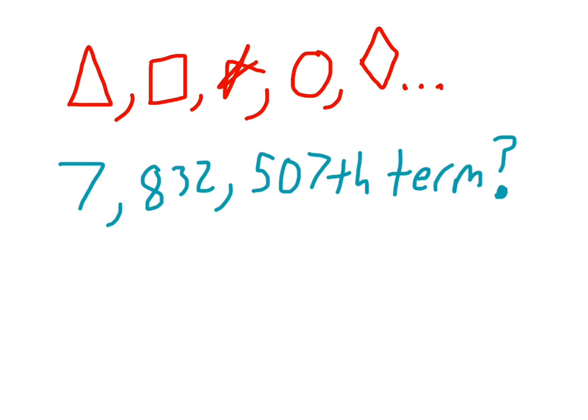So in this case, we have a pattern, and the pattern goes triangle, square, star, circle, diamond, and it repeats indefinitely, triangle, square, star, circle, diamond, over and over and over again. And the question is, what's the 7,832,507th term?